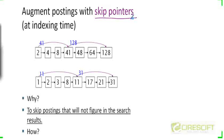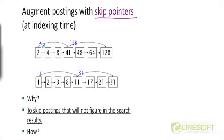We are going to add these skip pointers at indexing time. So when the indexer is creating the postings list — recall we saw briefly how the indexer generates the index using the sort operation — it will not only generate the postings list but also add skip pointers to it. A skip pointer is a pointer from a particular node to some other node far ahead in the same list.